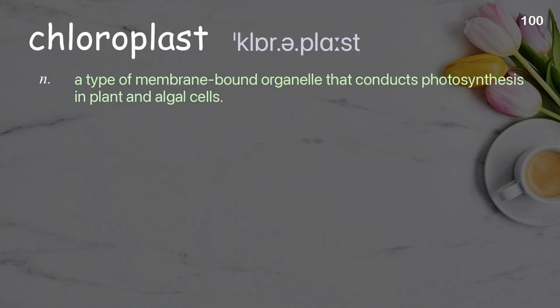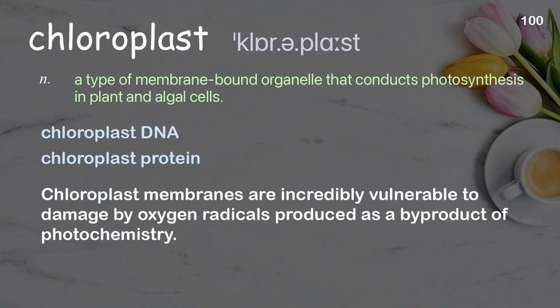Chloroplast. A type of membrane-bound organelle that conducts photosynthesis in plant and algal cells. Examples: chloroplast DNA, chloroplast protein. Chloroplast membranes are extremely vulnerable to damage by oxygen radicals produced as a byproduct of photochemistry.